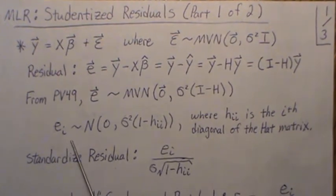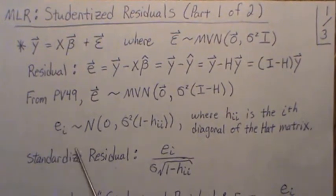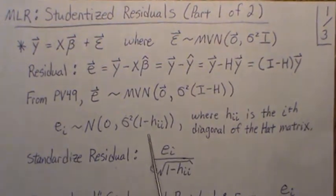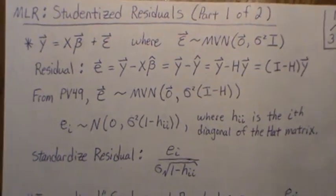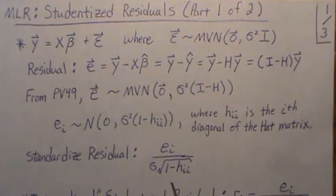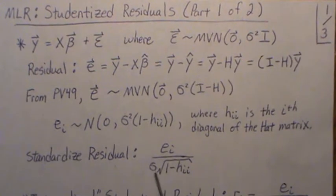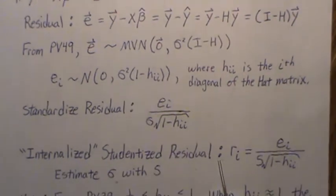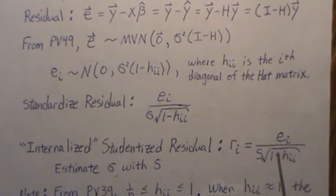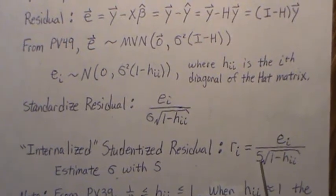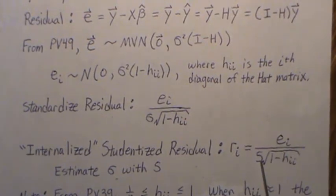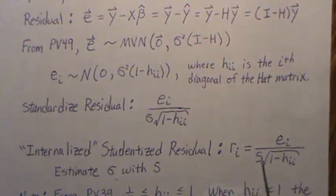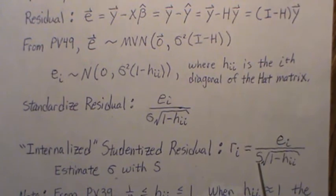To standardize the residuals, we divide by the standard deviation — that's called a standardized residual. To studentize it, we estimate the population variance with the sample variance, using s from our data, which is the square root of the mean square error. That gives us what's called a studentized residual.